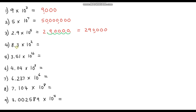Question four: 8.3 times 10 squared. So we have 8.3, and we're going to move the decimal point to the right two times. I'll need an extra placeholder zero for this. Moving it twice — one, two — the decimal point is now here, giving us eight hundred and thirty.